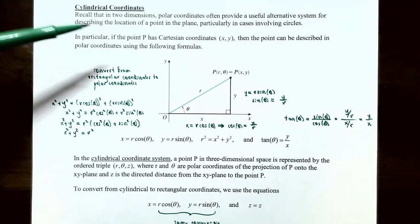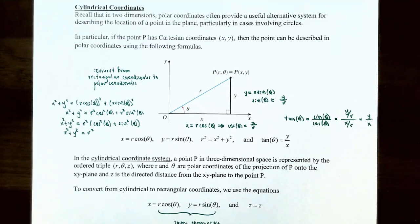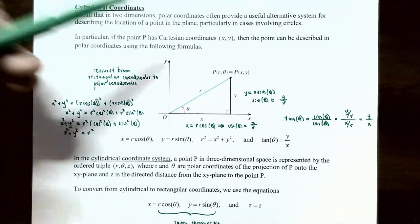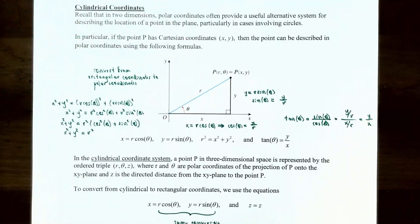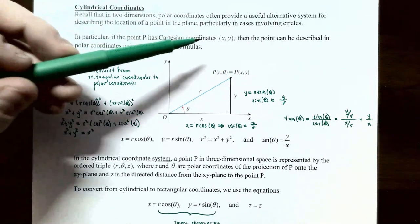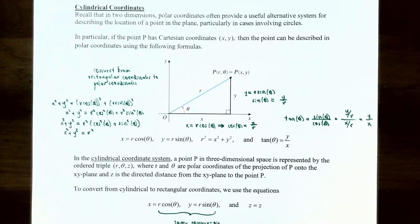If you have a point P in the Cartesian coordinate system or the xy-plane, written as (x, y), the x-coordinate describes the distance from the y-axis and the y-coordinate describes the distance from the x-axis — these are rectangular coordinates describing distances from each coordinate axis. If you want to write this point in polar coordinates, you use the following formulas: x equals r times cosine of theta, y equals r times sine of theta, r squared equals x squared plus y squared, and tangent of theta equals y divided by x.